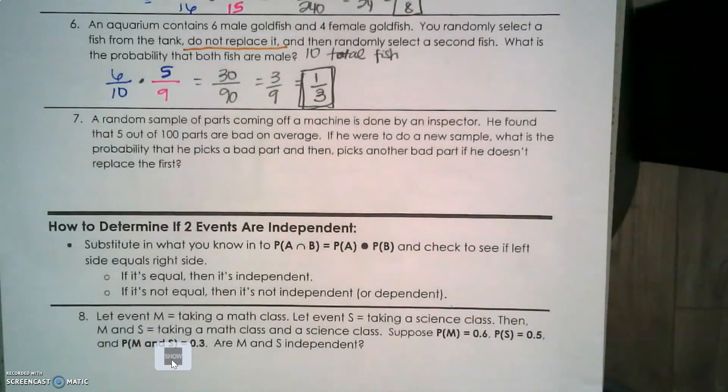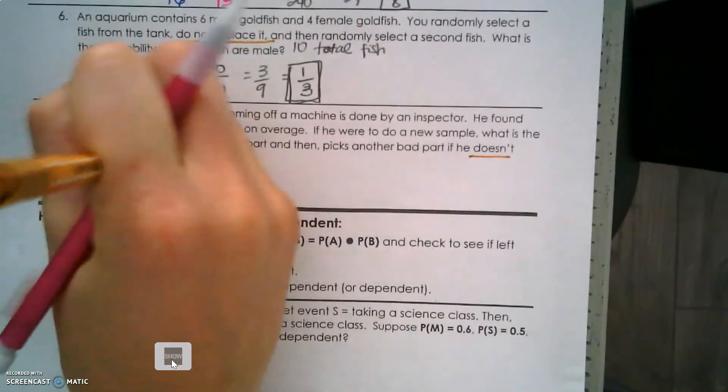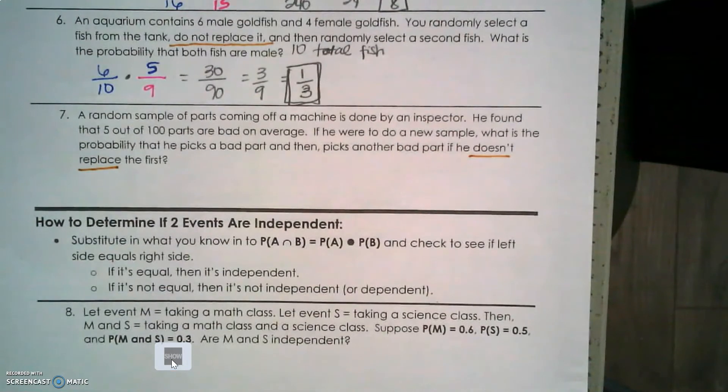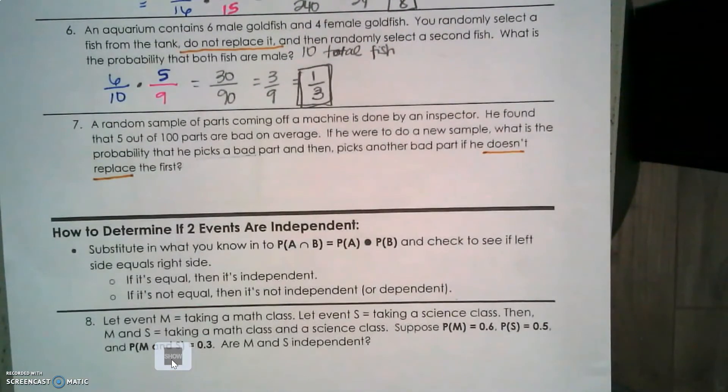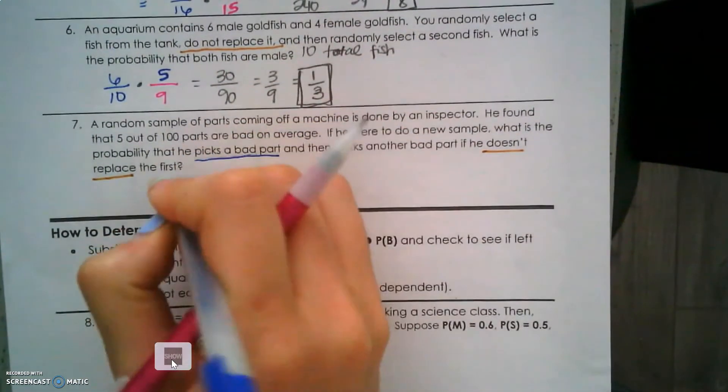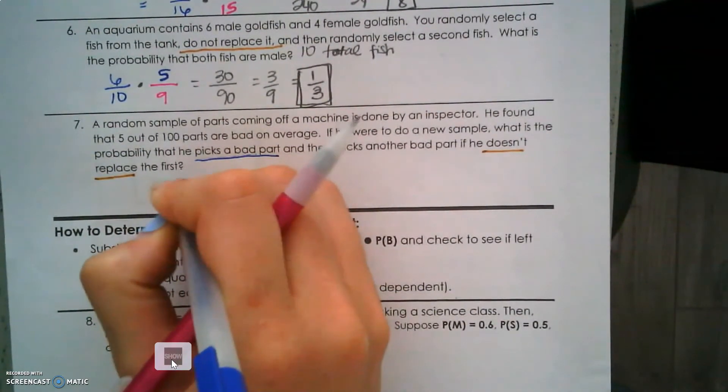A random sample of parts coming off a machine is done by an inspector. He found that 5 out of 100 parts are bad on average. What is the probability he picks a bad part and then picks another bad part if he doesn't replace the first? Again, 'doesn't replace' means dependent. The first time he picks, he has a 5 out of 100 chance of picking a bad part.